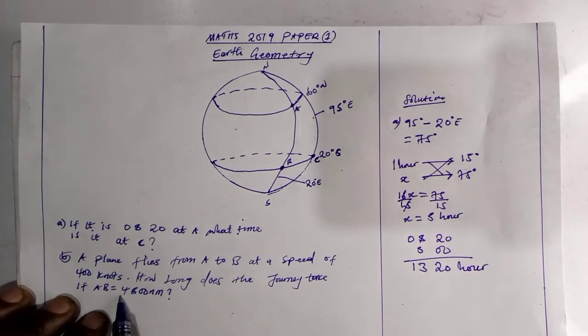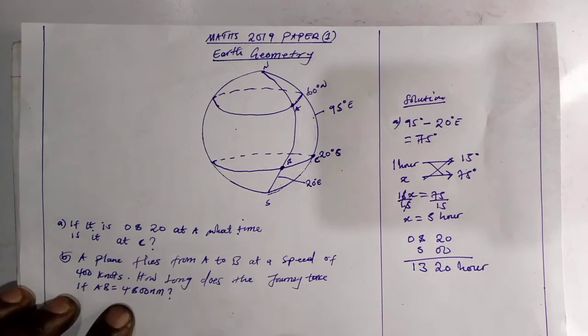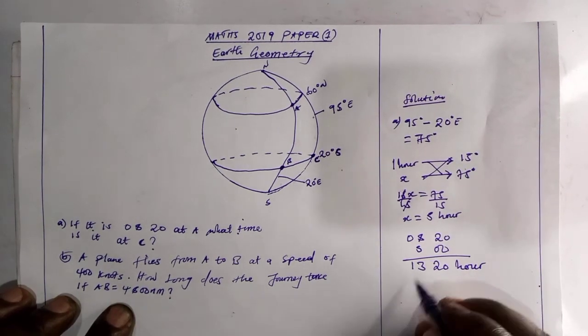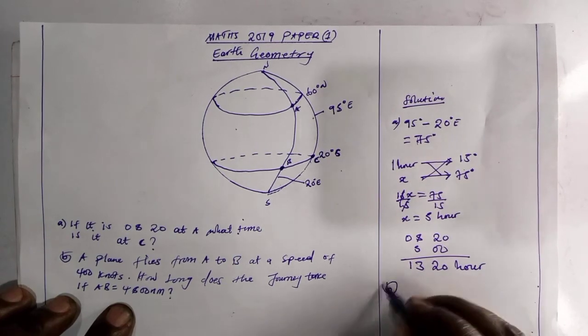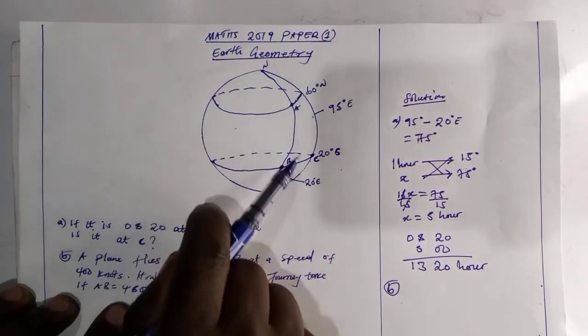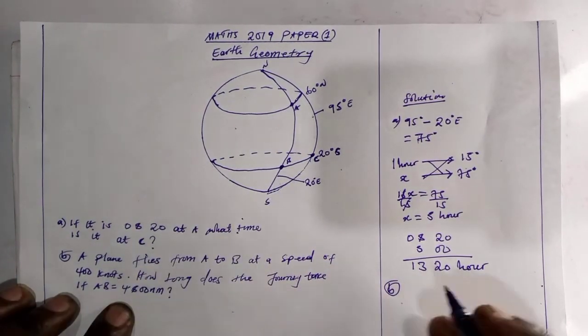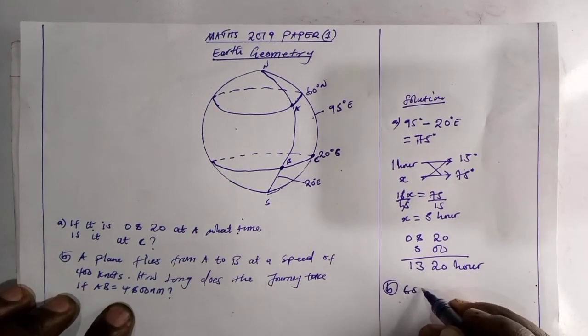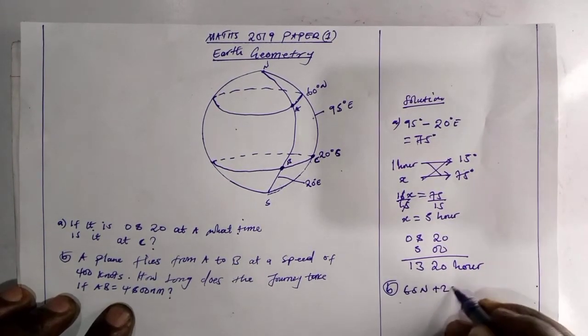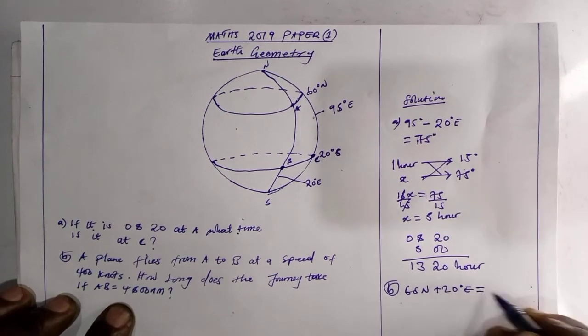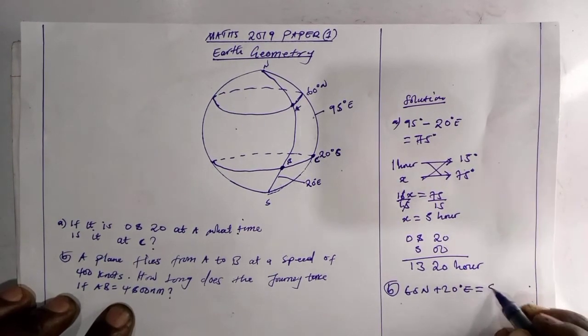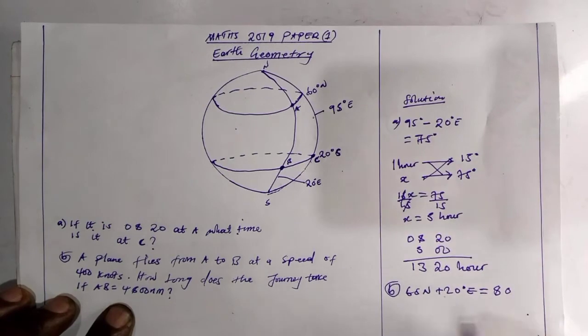For you to prove that this distance is 4800, they added, this is B, they added, we have 60 and 20 east. We have 60 north plus 20 degree east, which is equals to 80.